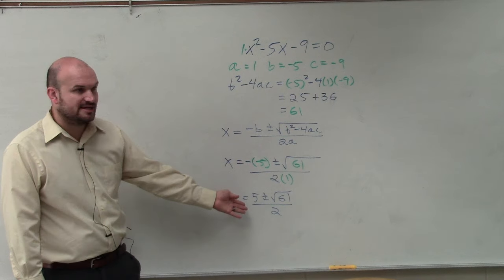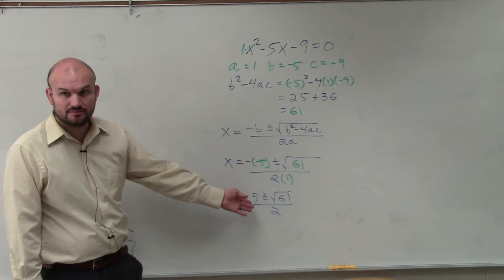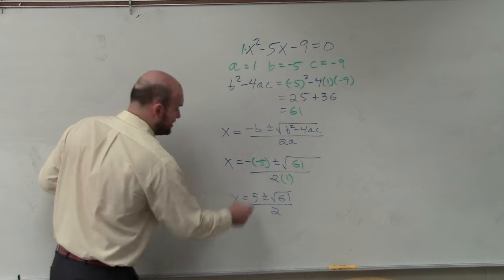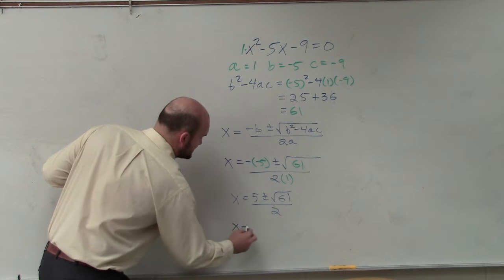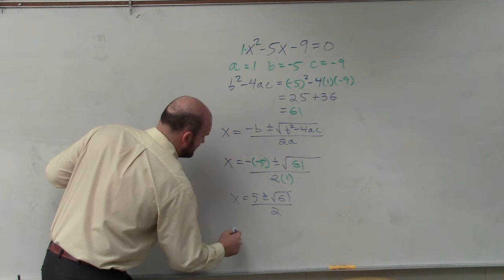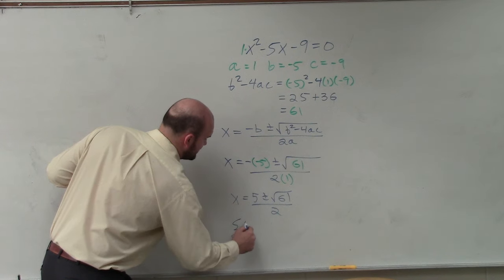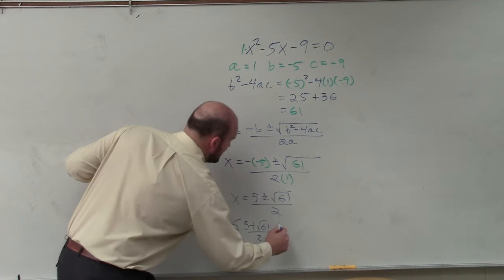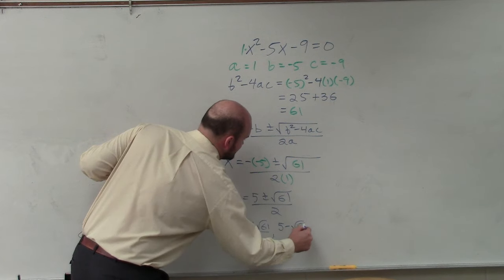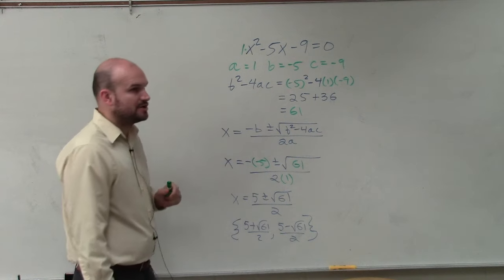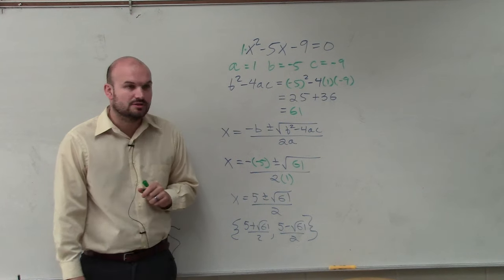So now that is a correct way to write the problem. You could also break up the plus or minus. And you could say x equals. You could also write it as, in a solution set like this, 5 plus the square root of 61 over 2, comma 5 minus the square root of 61 over 2. Those are both acceptable solutions.